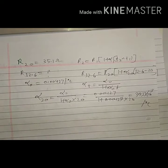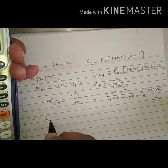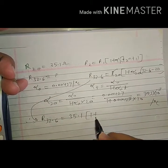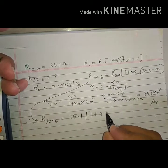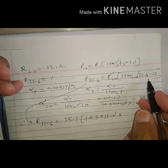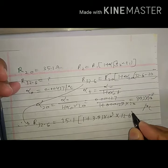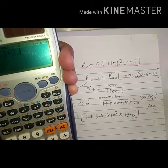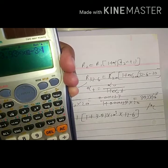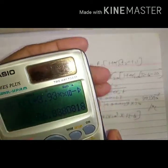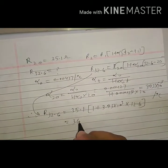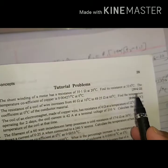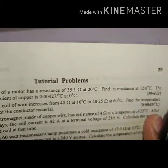Therefore, R₃₂.₆ = R₂₀ × (1 + α₂₀ × (32.6 − 20)). With R₂₀ = 35.1, α₂₀ = 3.93 × 10⁻³, and temperature difference 12.6°C: R₃₂.₆ = 35.1 × (1 + 3.93 × 10⁻³ × 12.6) = 36.84 ohm. Note: the answer given in the textbook is 39, which is incorrect. The correct answer is 36.84 ohm.